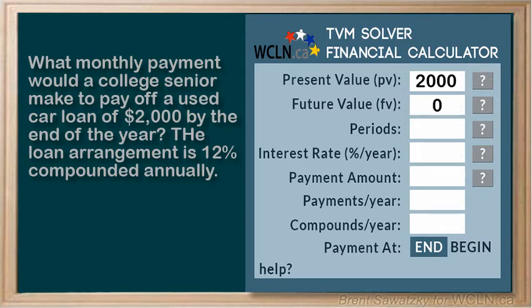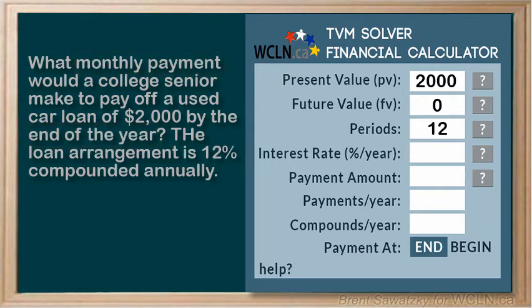Now the periods — we're dealing with one year and we have 12 payments per year, so periods is 12. The interest rate, we're told, is 12%. The payment amount is what we're looking for, so we'll skip that. Payments per year is 12, and we're told that we have one compound per year.